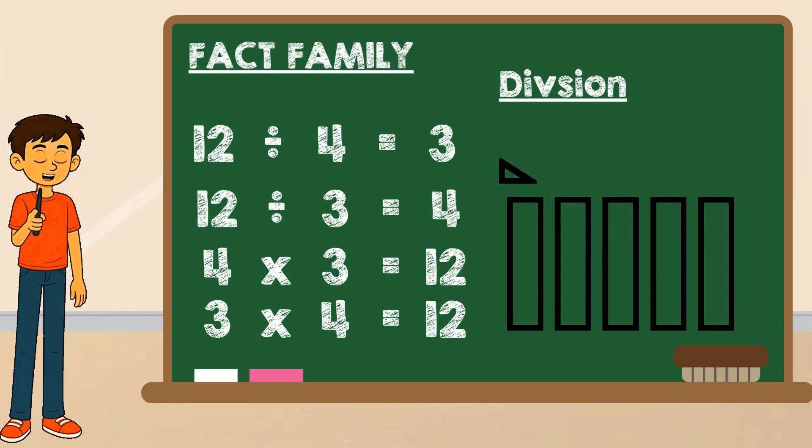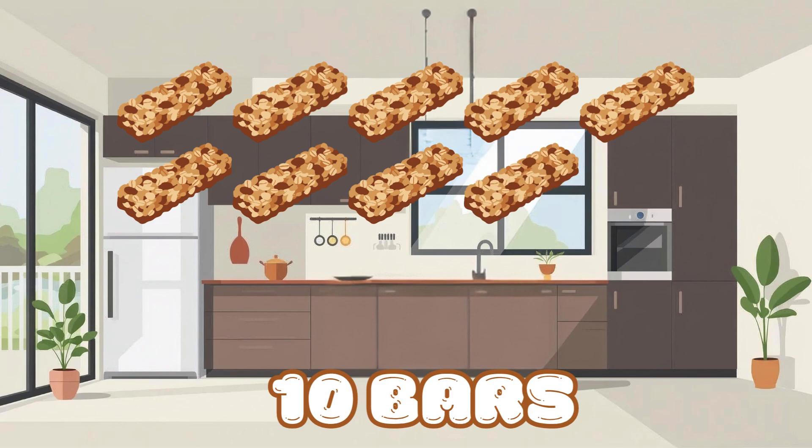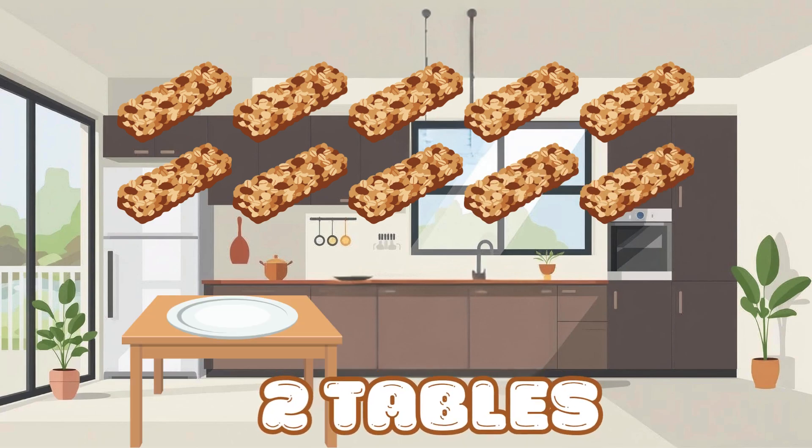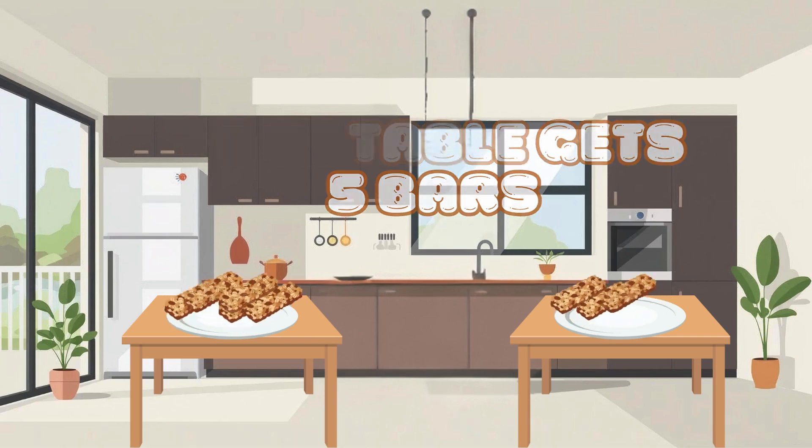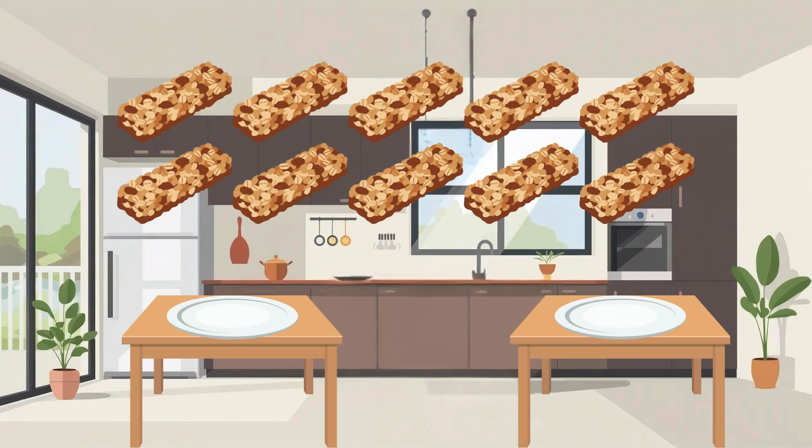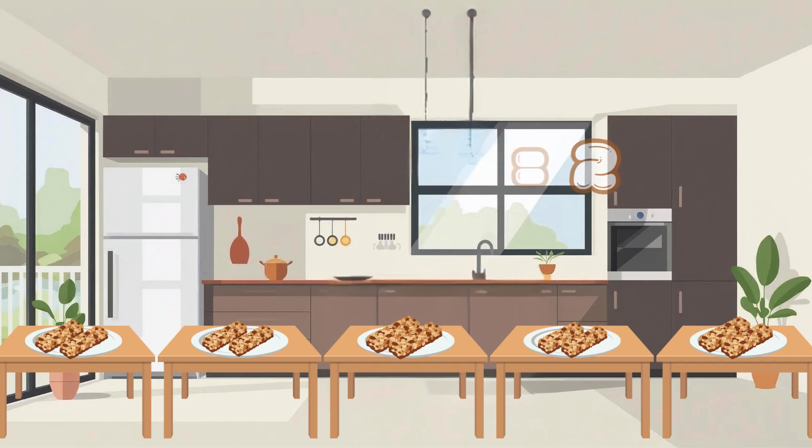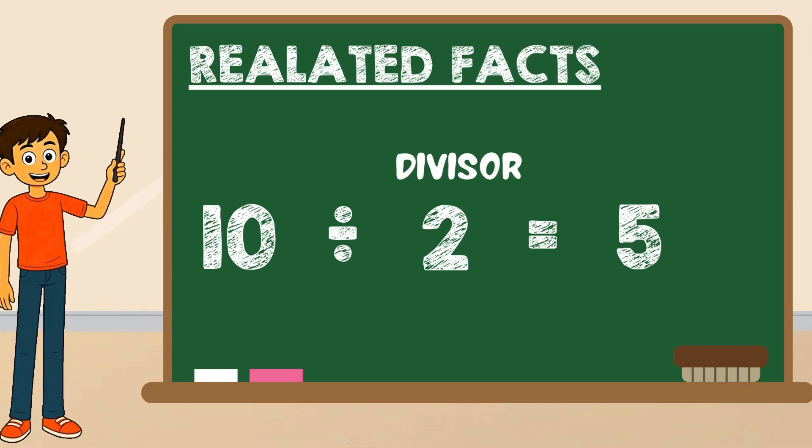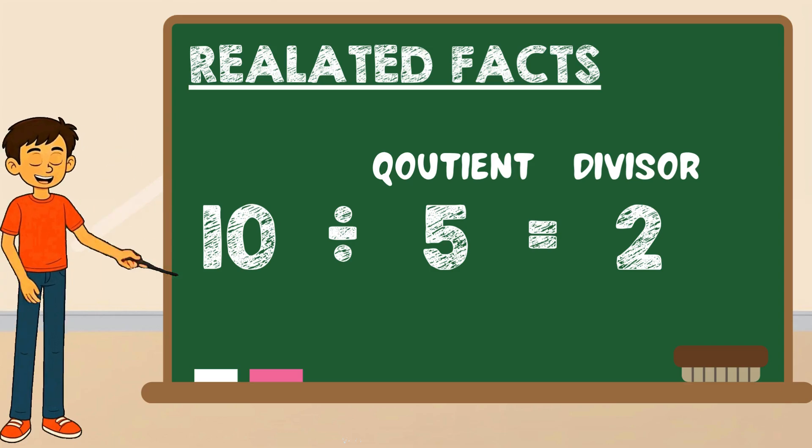Let's try another example. There are ten granola bars and two snack tables. If we share them equally, each table gets five granola bars. That's ten divided by two equals five. But if we switch it around and have five tables instead, each one gets two bars. That's ten divided by five equals two. Both are true. When the divisor and the quotient swap places, it still works. Those are called related facts.